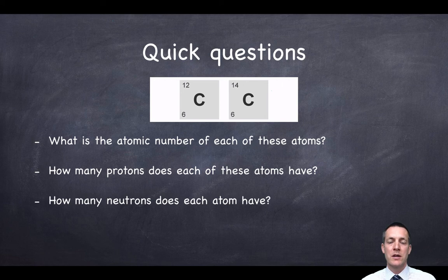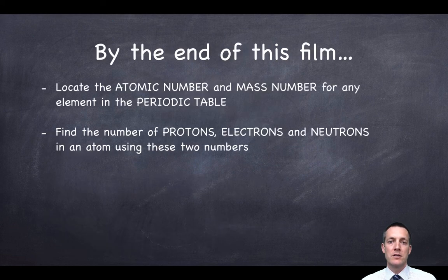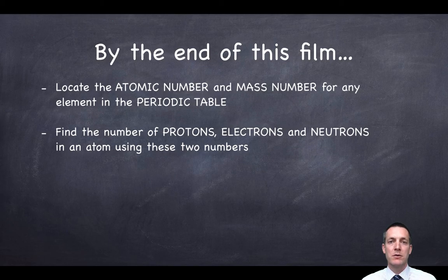There are a few more quick questions — pause the film so that you can answer them, and here are the answers. Hopefully you were able to answer those questions correctly. To summarise: we've looked at where to find the atomic number and the mass number in the periodic table, and what information about protons, neutrons, and electrons we can get from those two numbers. If you're confused about anything, it's really important to go and see a teacher soon so that you can move on in the topic feeling confident. We'll see you next time.